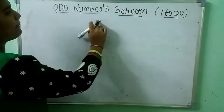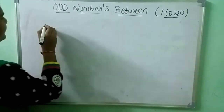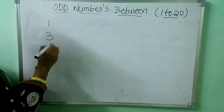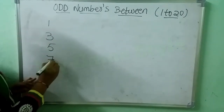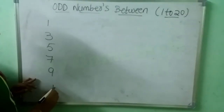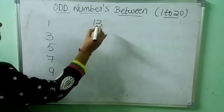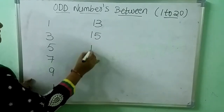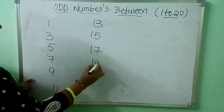Odd numbers between 1 to 20. Let's start. 1, 3, 5, 7, 9, 11, 13, 15, 17, 19.